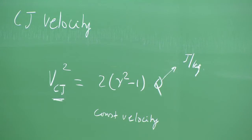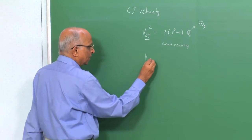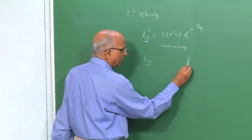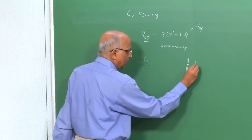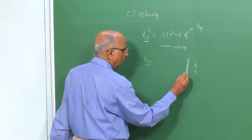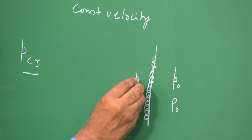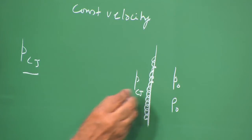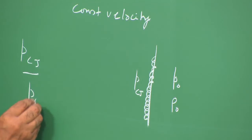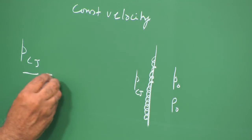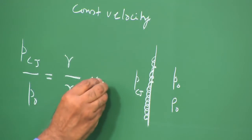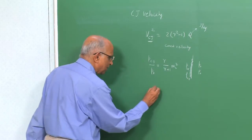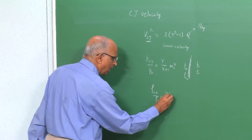We also derived an expression for the pressure ratio behind a detonation. The value of P_CJ divided by the initial pressure P₀ in the unreactive medium is equal to γ/(γ+1) times M_s². We also found the expression for the density behind the detonation: ρ_CJ / ρ₀ = (γ+1)/γ.